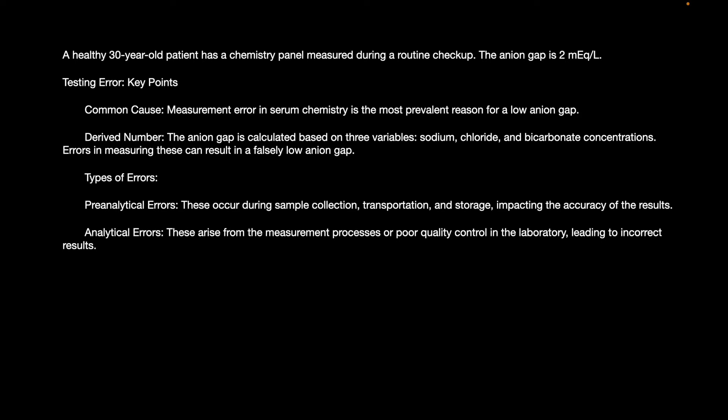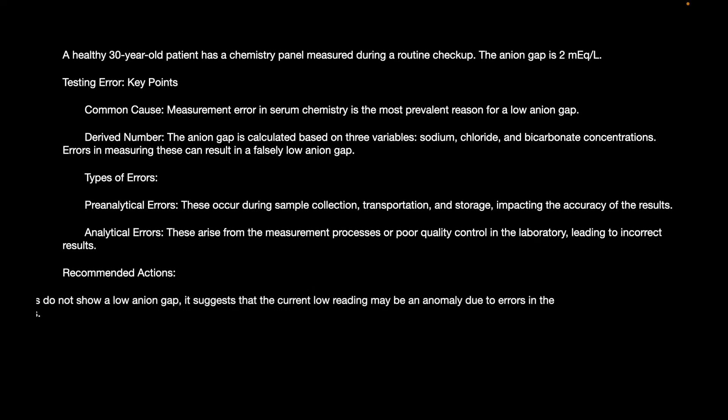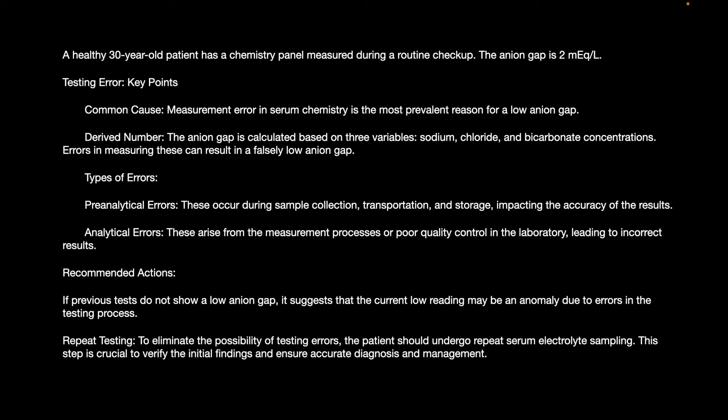Analytical errors arise from measurement issues where poor quality control in the lab results in incorrect assessment of blood ion levels. If previous tests do not show a low anion gap, the current low reading may be an anomaly due to errors in the testing process. Repeat testing is recommended; the patient should undergo a repeat serum electrolyte sampling to verify the initial finding and ensure accurate diagnosis.